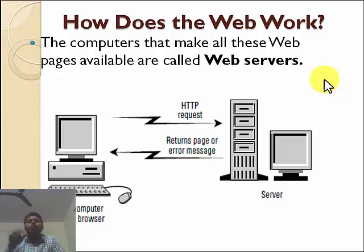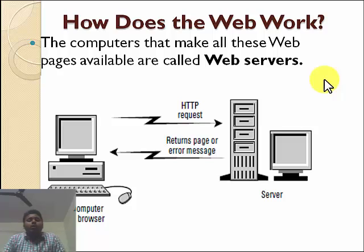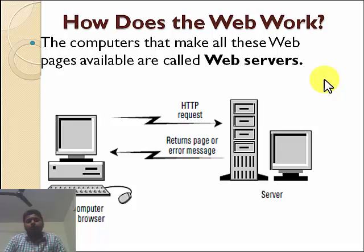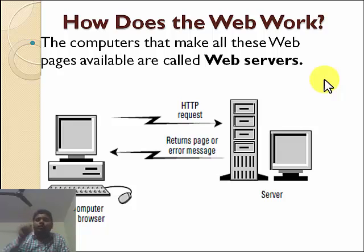When we type google.com, the request goes to Google's server. But there are millions of computers all over the world — how does a request know which computer is Google's computer? We need to distinguish between them: this computer is Google's server, this one is Facebook's server. How do we distinguish? Just like we all have different addresses.